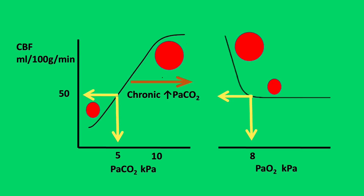These two important graphs compare the partial pressures of either carbon dioxide or oxygen on the x-axis with cerebral blood flow on the y-axis. For CO2, there is a linear relationship between 3 to 11 kPa: doubling the CO2 doubles the flow due to increased vascular diameter. A chronically raised PaCO2 results in a shift of this curve to the right. For oxygen, below 8 kPa is a steep inflection point where cerebral blood flow increases significantly, whereas above 8 kPa cerebral blood flow remains relatively constant for a given PaO2.